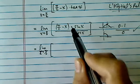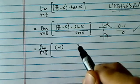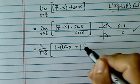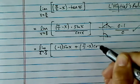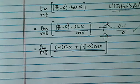So here, we're going to take the derivative of the top using the product rule. Derivative of the first term is minus 1, leave the sine x alone, plus leave the first term alone and take the derivative of the second one.